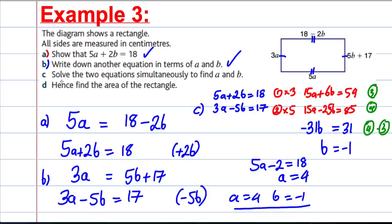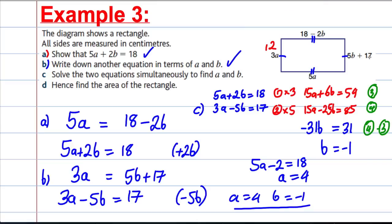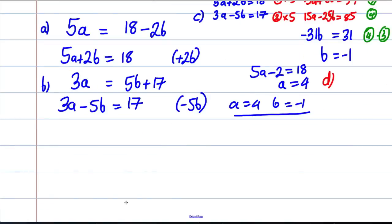Checking: 3 times A is 12, and 5 times B plus 17 gives 5 times minus 1 which is minus 5, plus 17 equals 12 — they match. 5A is 20, and 18 subtract negative 2 is 20 — everything works. Part D: the area of a rectangle is base times height. The dimensions are 20 times 12, so 20 multiplied by 12 equals 240 centimetres squared.